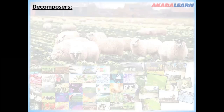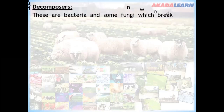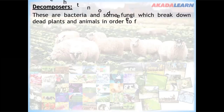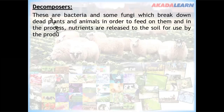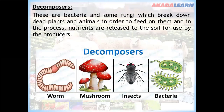The decomposers are bacteria and some fungi which break down dead plants and animals in order to feed on them. In the process, nutrients are released to the soil for use by the producers.